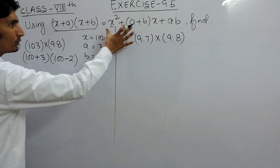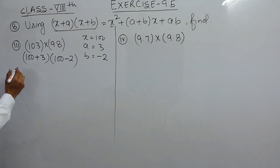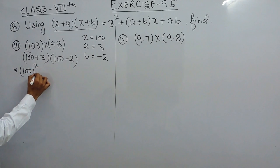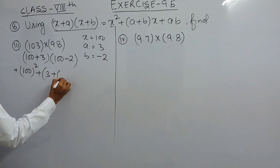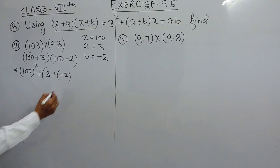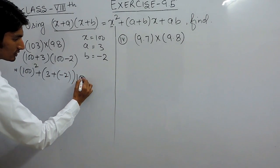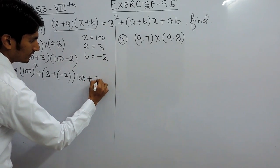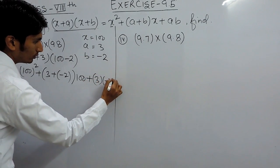Because this is equal to this, this can be expanded as x squared. Our x is 100, so this will be x squared plus (a plus b) times x, which is 100, plus a times b.